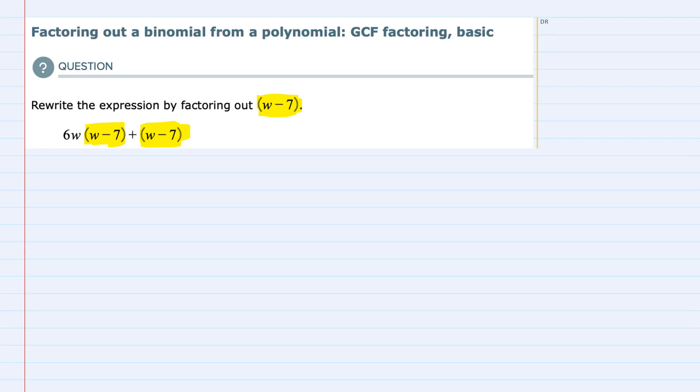So to write that, I'm going to start with the (w - 7) that I am factoring out, and in order to see what's left, I'm going to put the remaining terms inside the parentheses. I first look at the leading term which was 6w times (w - 7), and if I'm factoring out the (w - 7), then that means I am dividing out the (w - 7).